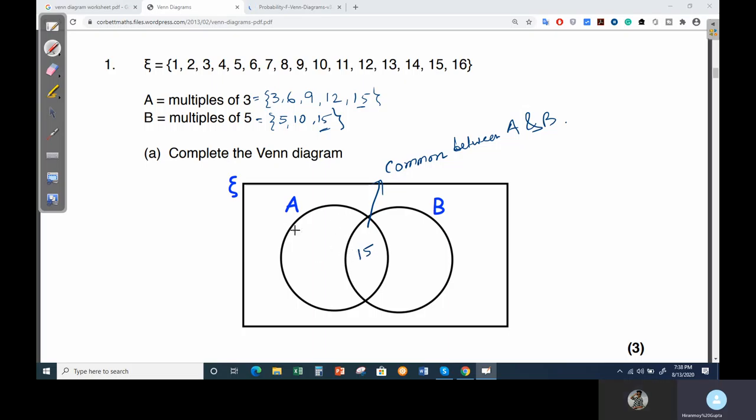Now this is common. The rest of the values you have to check it out: like three, six, nine, twelve. Fifteen is already there. Now for B: five, ten, and fifteen. Now rest of the values: one, two, four, seven, eight, eleven, thirteen, and sixteen. So these are the values you have to place it in this box. This total box is talking about ξ. So your distribution is done. The distribution is complete.